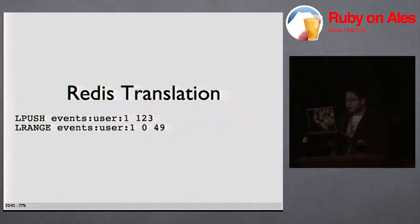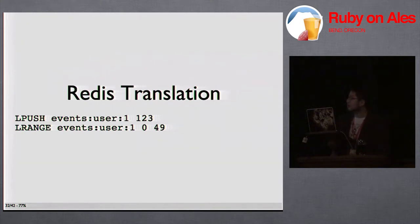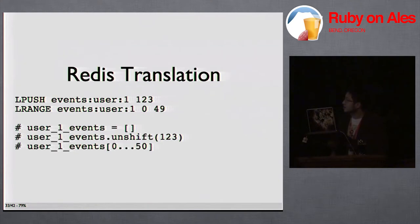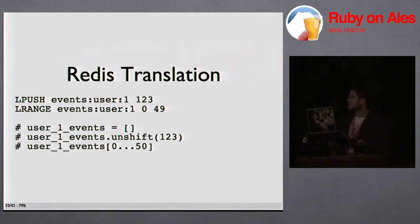Instead of storing the event data multiple times for each follower, I decided to just store an array of IDs — a list of IDs in Redis. The commands to add one event to a list and pull them back out: LPUSH is kind of like unshift in Ruby — you add something to the front of the array. LRANGE is what we use to get back items — that call is getting the first 50 items from the list. So we're storing just the IDs of all the repeated events and not the whole event.